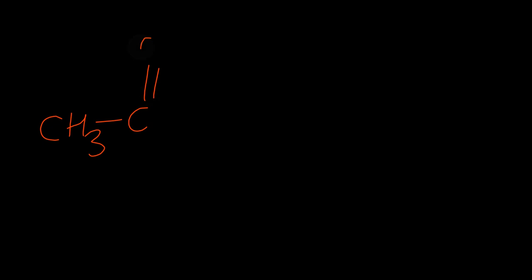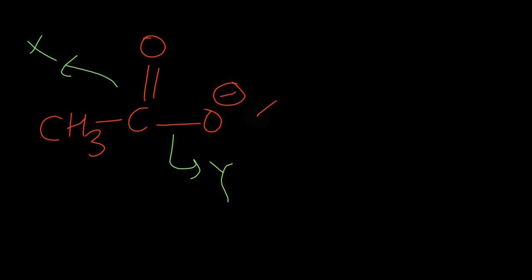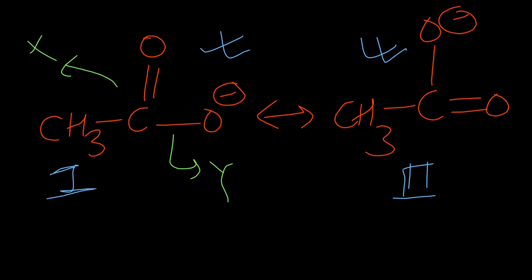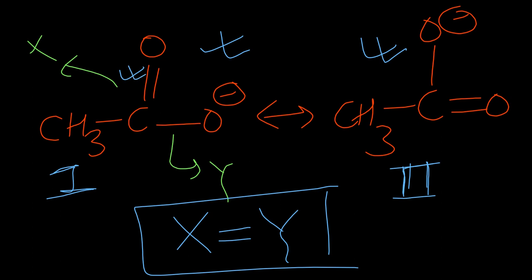For acetate anion CH₃COO⁻, we again draw resonating structures and get two resonating structures. Both have the same stability, so their contributions to the hybrid are equal. Therefore X equals Y — both carbon-oxygen bonds in acetate have the same bond length, as double bond and single bond character contribute equally.